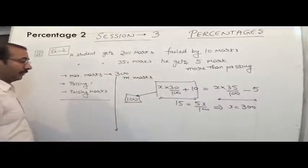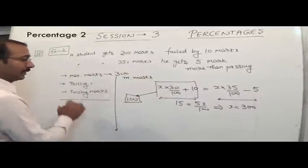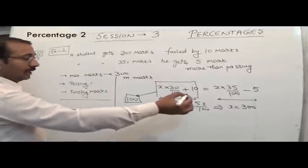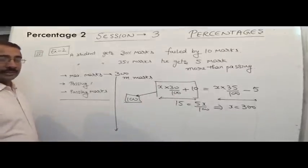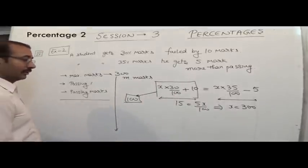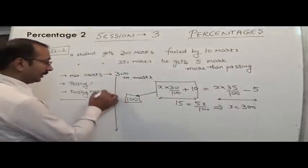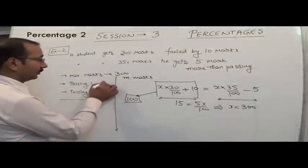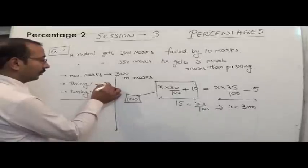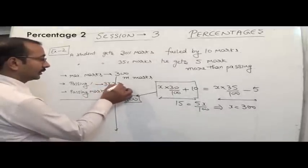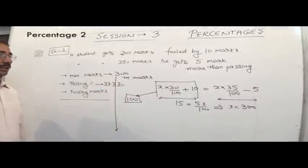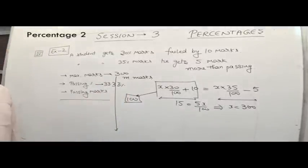If we have to find the passing percentage out of 300 with passing marks of 100, that is equal to 33.33%. So that is the first method, known as the equation method.